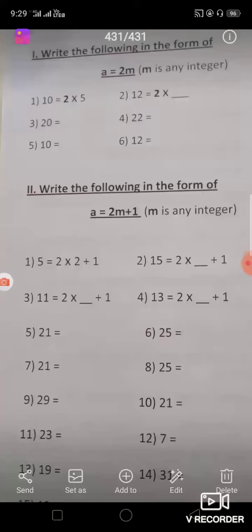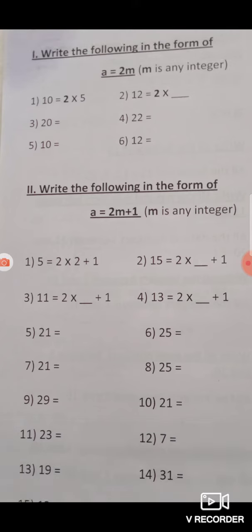Good morning children. Let us try to do this skill sheet. Write the following in the form of a equals 2m. A is a dividend that can be written in the form of 2 into m.